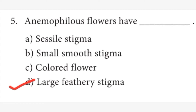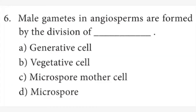Anemophily means the pollination with the help of wind is called anemophily. In wind-pollinated flowers, the characteristic feature is large feathery stigma. Sixth question: male gametes in angiosperms are formed by the division of dash. Answer is A option, generative cell.